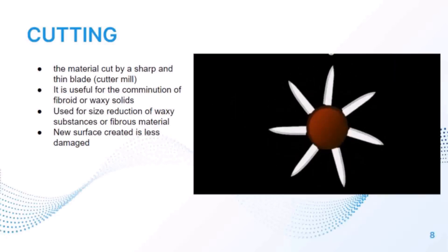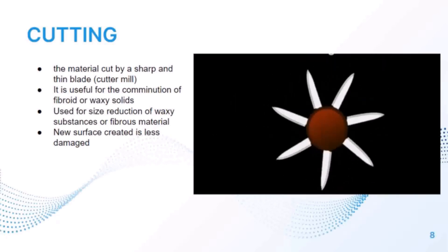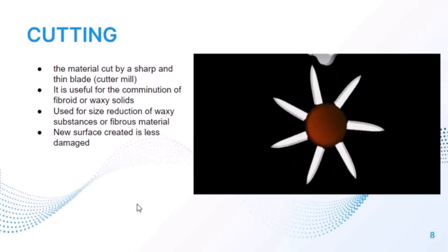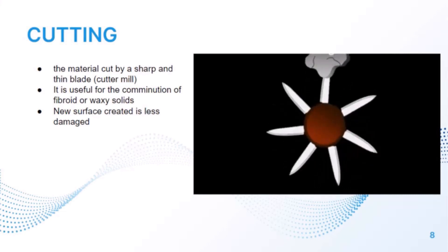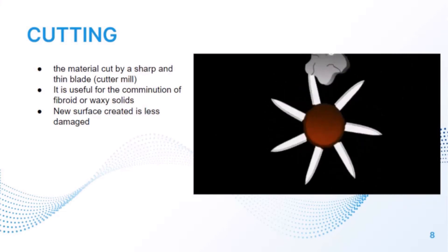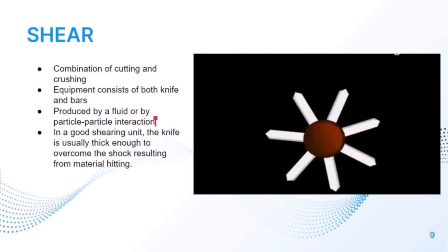The third type of mechanism is cutting. The material is cut by a sharp and thin blade or cutter mill, useful for communiting shape. The new surface created by cutting is less damaged compared to other mechanisms of size reduction. The fourth mechanism is shear, which is a combination of cutting and crushing.